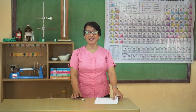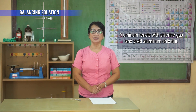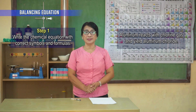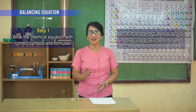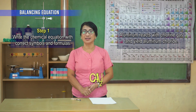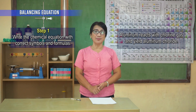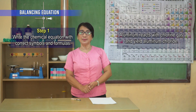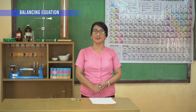Please get a paper and pen and let us try balancing this equation. Aluminum reacts with chlorine gas and yields aluminum chloride. Step one: write the chemical equation with correct symbols and formulas. The symbol of aluminum is Al. The symbol of chlorine is Cl. Since it is a diatomic element, chlorine has a subscript of 2, giving Cl₂. The chemical formula for aluminum chloride is AlCl₃. With this information, the chemical equation is written out.